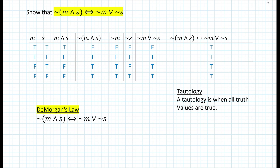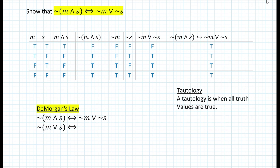According to De Morgan's Law, not (M and S) is logically equivalent to not M or not S. You can think of it as follows: imagine that you take the negation sign and distribute it into the parentheses, but then you also have to flip the 'and' to an 'or.' Now, what if you had the quantity M or S negated? So instead of an 'and,' you start with an 'or.' According to De Morgan's Law, you distribute the negation, but then the 'or' turns into the 'and.' You can prove the second form yourself using a truth table, and you'll end up with a tautology as well.